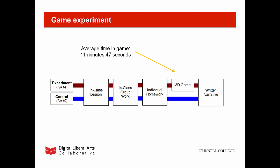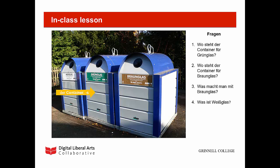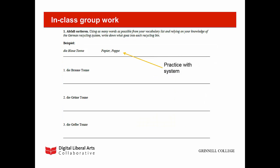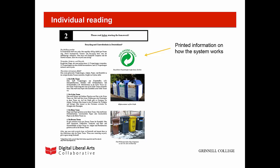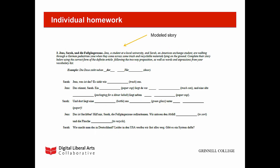But did the game actually help students learn German two-way prepositions? To test the effectiveness of the game, I devised an experiment comprised of in-class instruction and group work, individual homework, and the creation of a written narrative. In-class work consisted of slides that visually anchored the topic and class discussion to model vocabulary and grammar. Students would then reinforce their knowledge through in-class group work that required them to sort vocabulary into categories found in the activity system — for example, the Blauotona, the blue bin, is used for recycling paper and cardboard. At home, students would read a level-appropriate text describing how the activity system works, and then complete a short story modeling the situation they would write about in their narratives, focusing on appropriate use of two-way prepositions and vocabulary related to the topic.